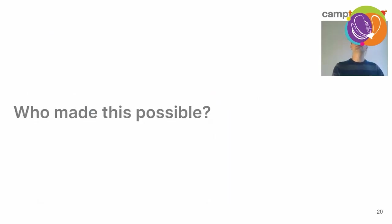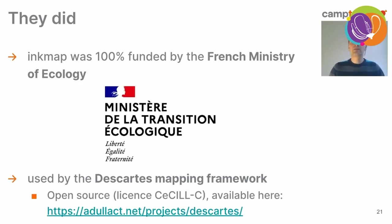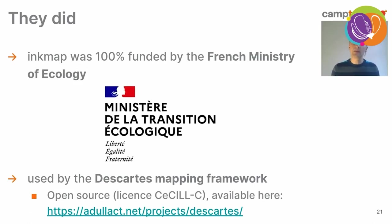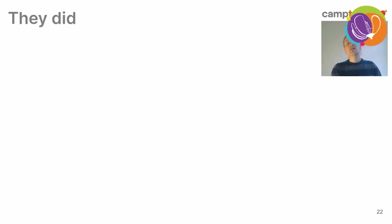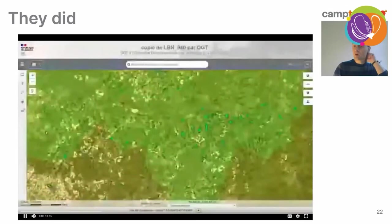Inkmap was 100% funded by the French Ministry of Ecology. They wanted this as part of their Descartes mapping framework, which is a very feature-rich open-source mapping framework. Descartes had a printing module for a long time, but they wanted to rewrite it from scratch because it was too limited. They went with a fully client-side solution because they wanted to give a lot of flexibility to the user when defining the layout of the printed document.